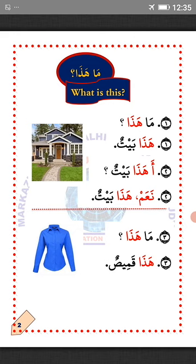Number 3: Ma hatha — what is this? Hatha qamis — this is a shirt. La'alaka fahimti? I hope you understand. MashaAllah.